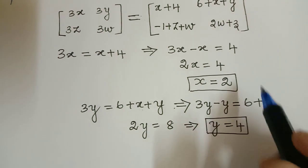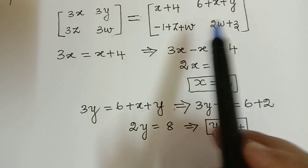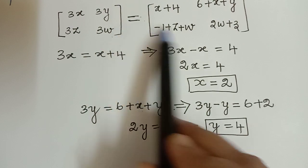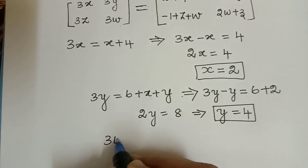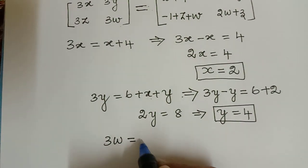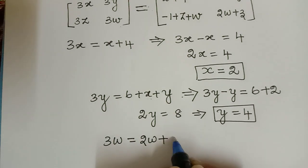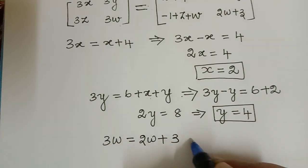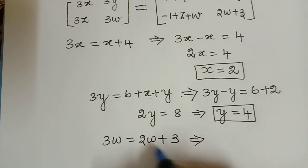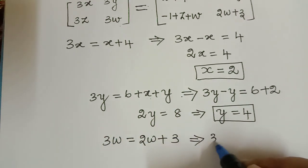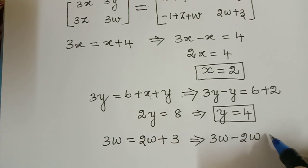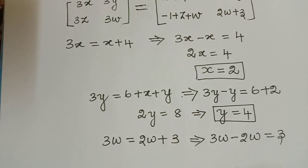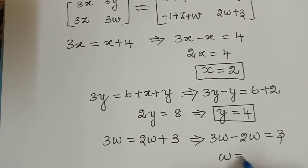Next we have to compare the w elements, that is 3w equals 2w plus 3. When we simplify this and take 2w to the left hand side, we get 3w minus 2w equals 3, and so the value of w is equal to 3.